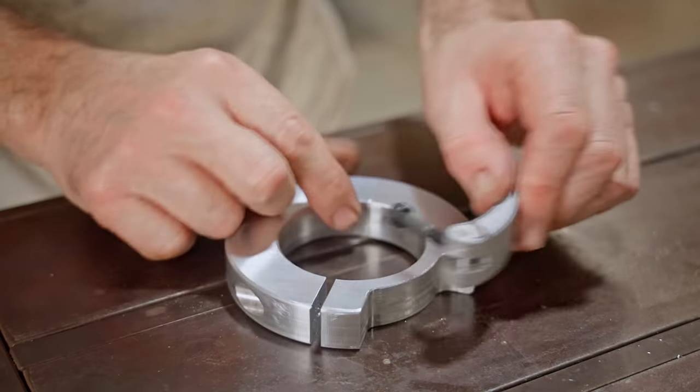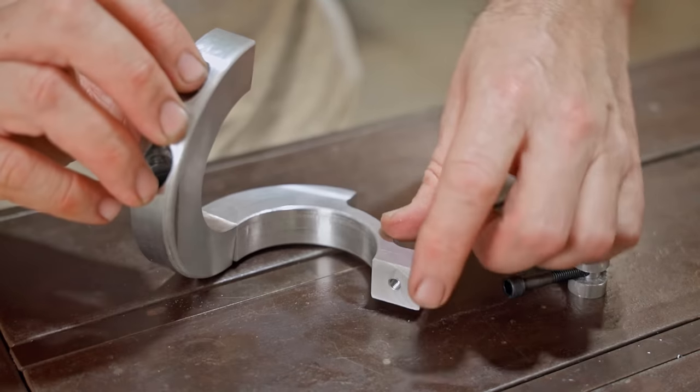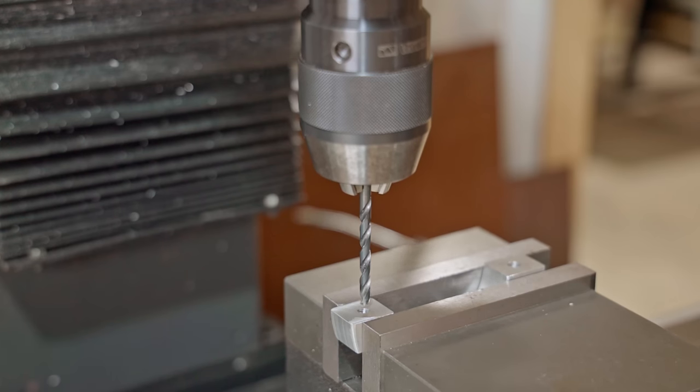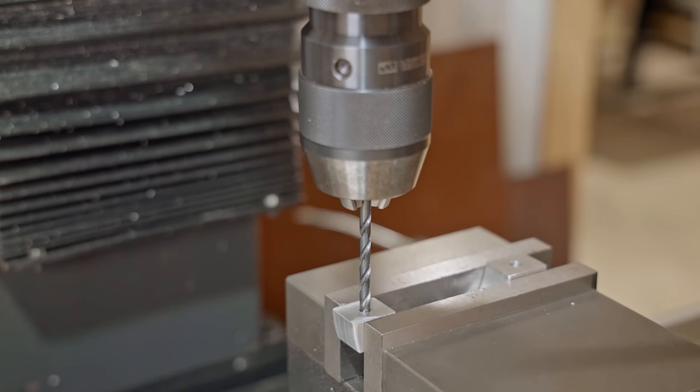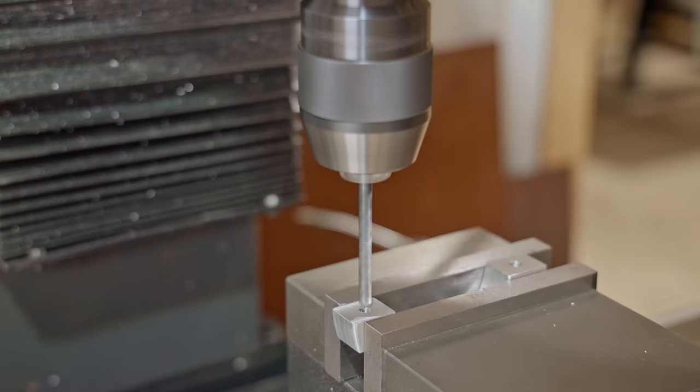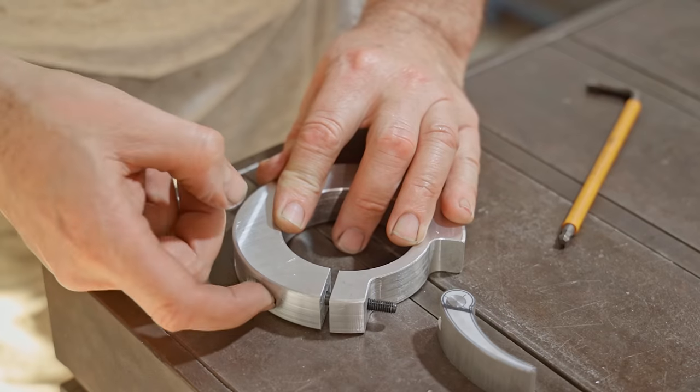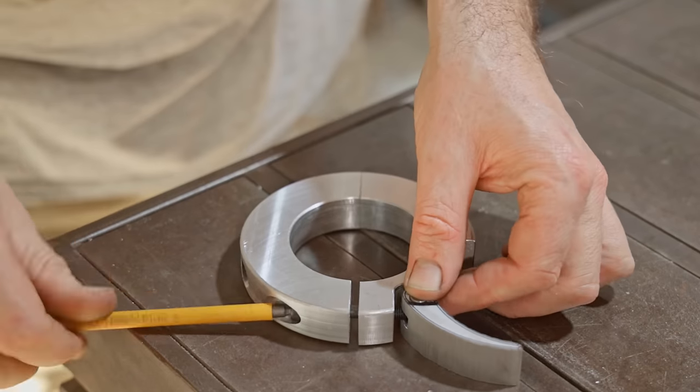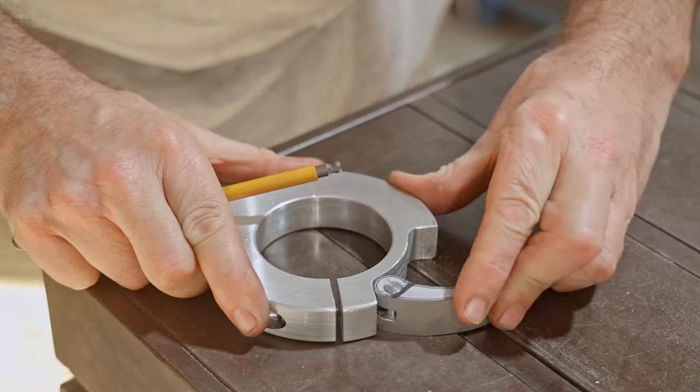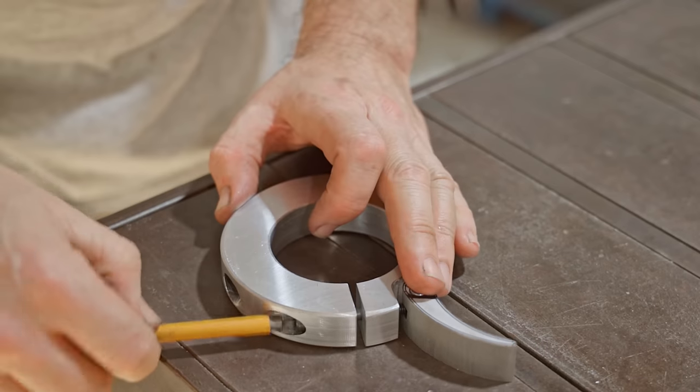The bolt needs to pass through both sides of the ring, so I need to drill through the threaded hole that I used earlier to fix the two halves together. That should be ready to try out on the column, so let's give it a go.